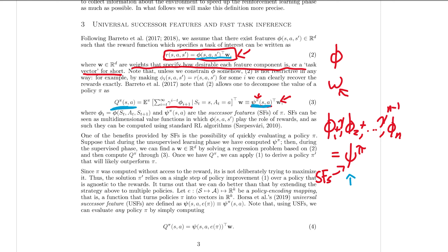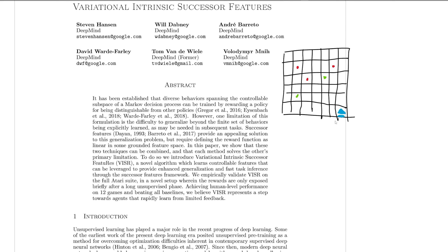If you're familiar with reinforcement learning, you might not be super impressed yet, because there are ways we can learn Q directly — like Q-learning, which is a very popular RL method. So why are we doing this complicated step of breaking the reward and Q value into two parts — the feature part psi and the task specification part w? The reason is that if we do this, going back to the grid world example, we can learn the successor features without any reward.